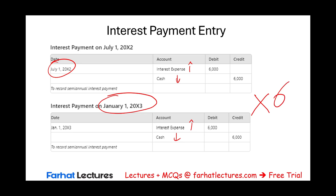This entry repeats itself six different times. What you need to notice is that the cash amount equals the interest expense. This is unusual in a sense — most bonds you will deal with will either be a premium or discount bond, requiring additional accounting. Here, cash equals interest expense simply because we have no discount and no premium to take care of. The entry — debit interest expense, credit cash — repeats six times.